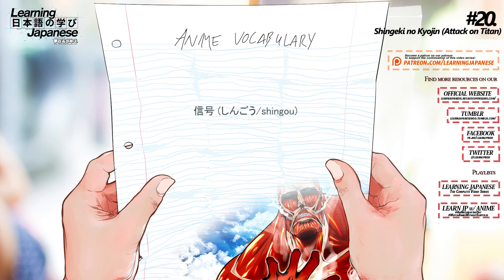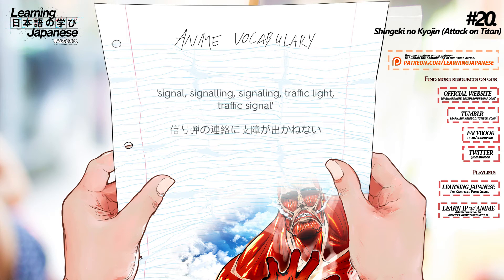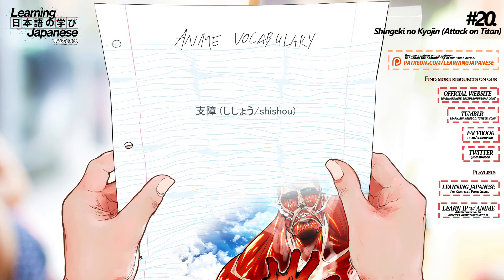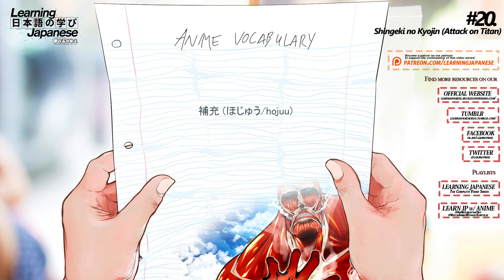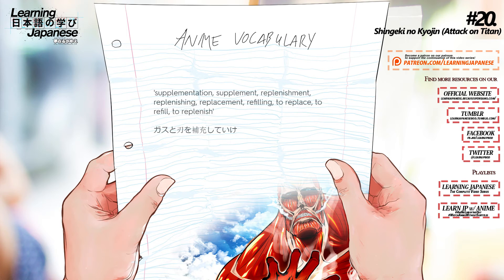信号 (shingo) — Signal, signaling, traffic light, traffic signal. 支障 (shishou) — Obstacle, hindrance, impediment, difficulty. 補充 (huju) — Supplementation, supplement, replenishment, replenishing, replacement, refilling, to replace, to refill, to replenish.